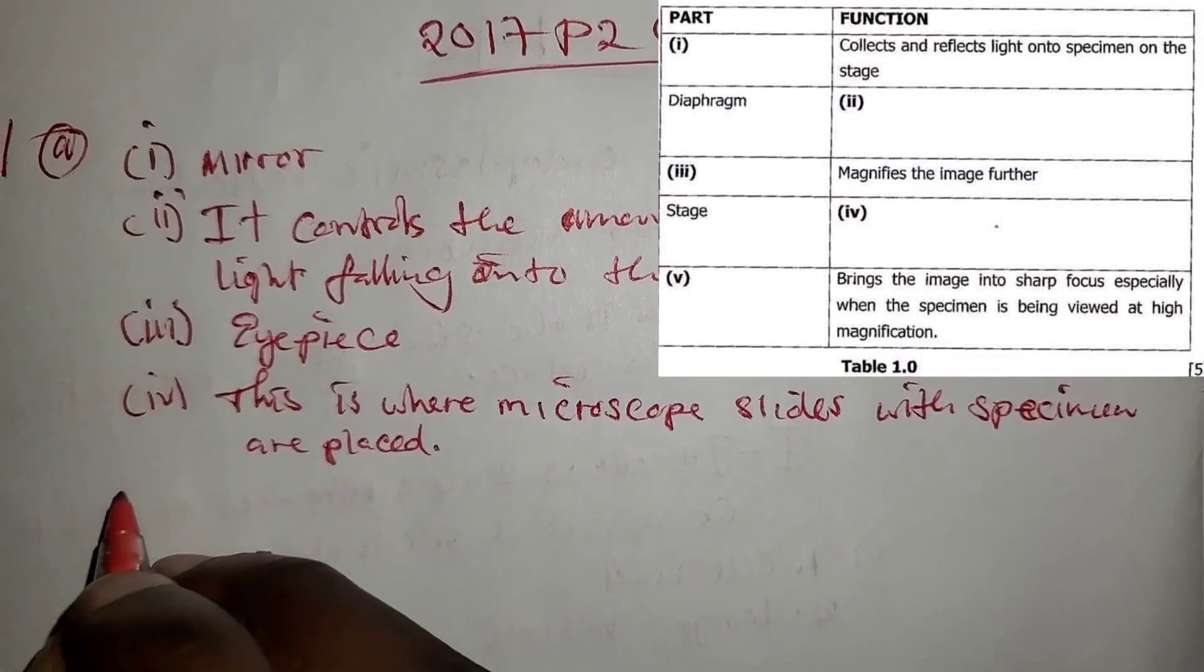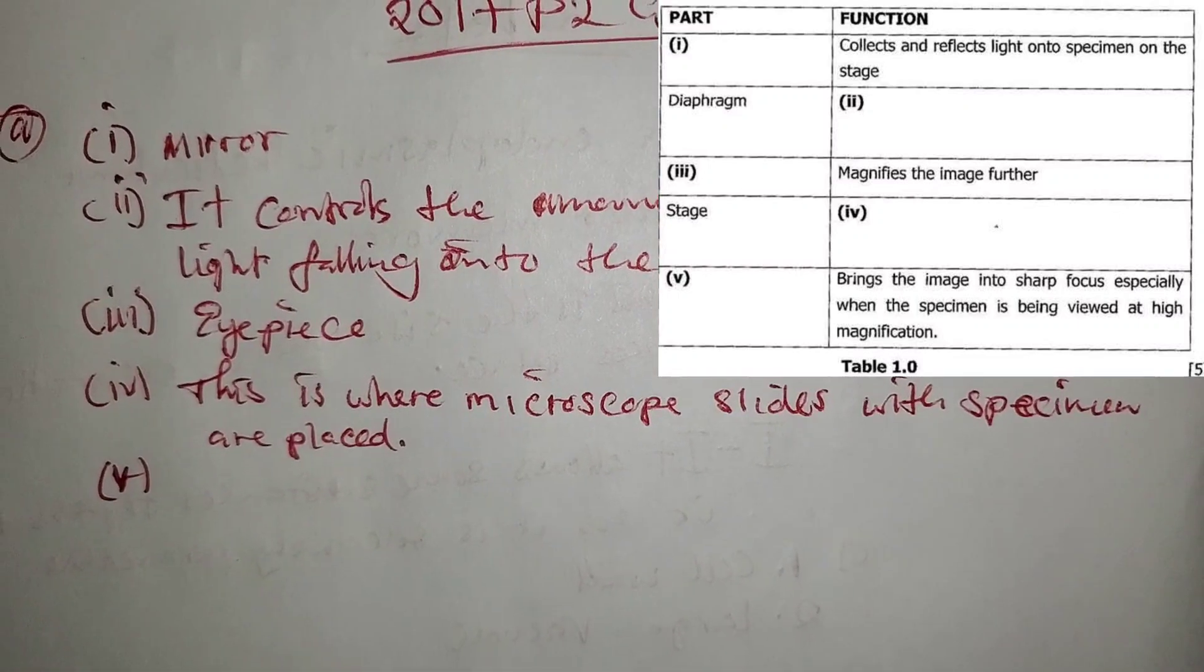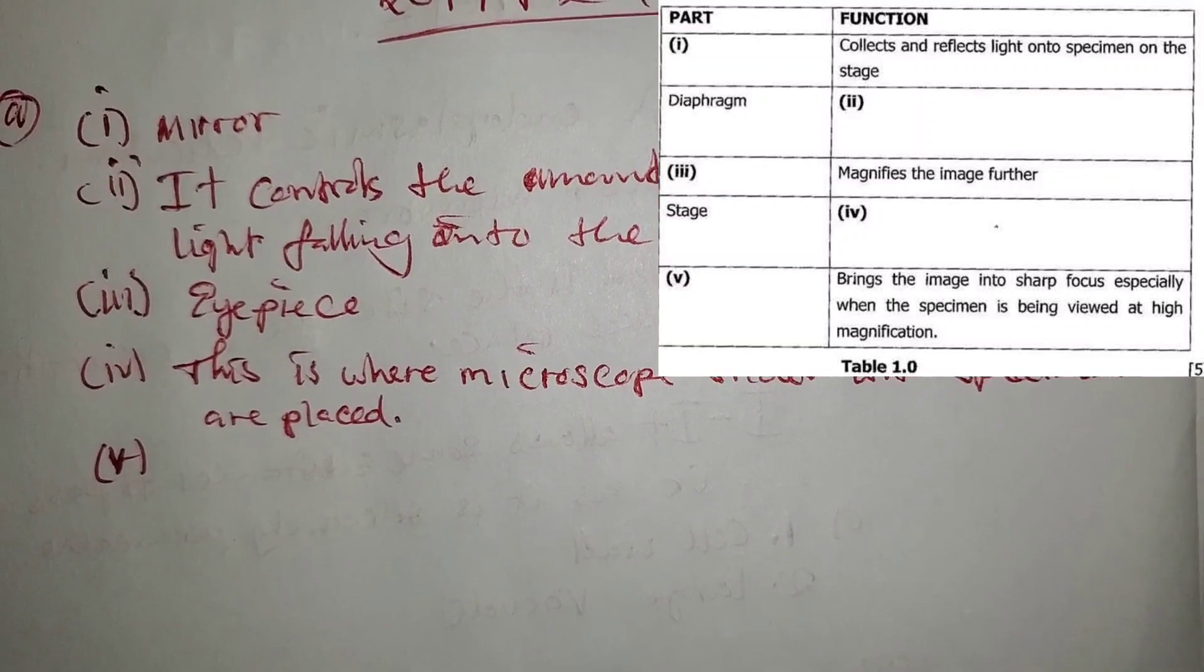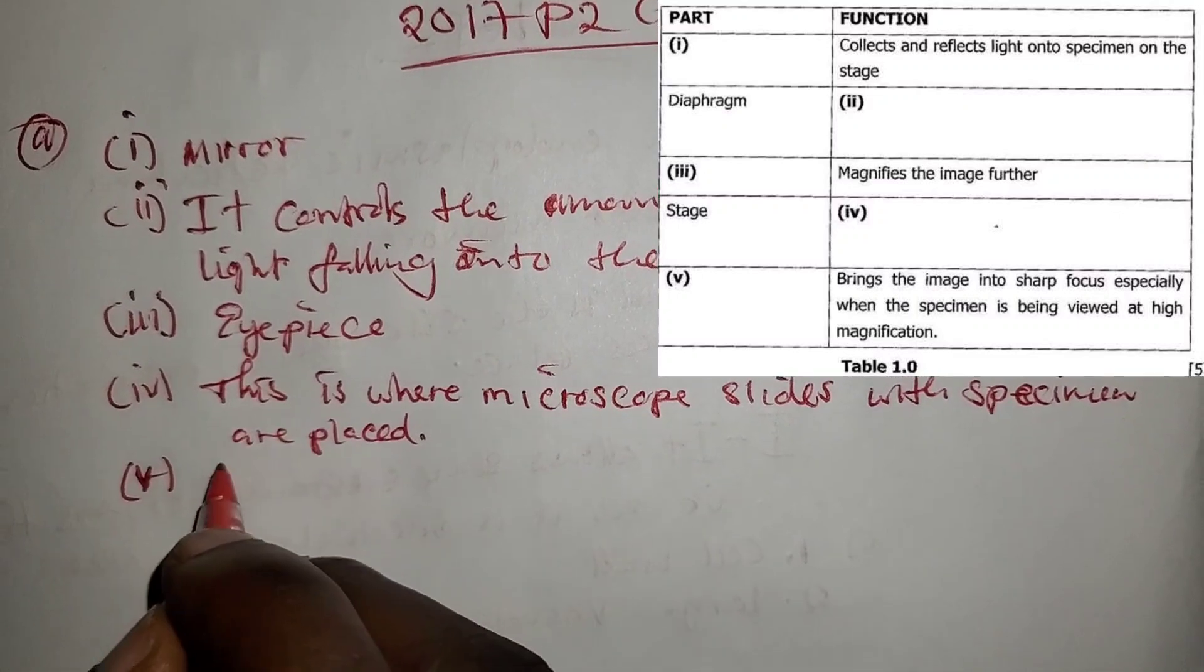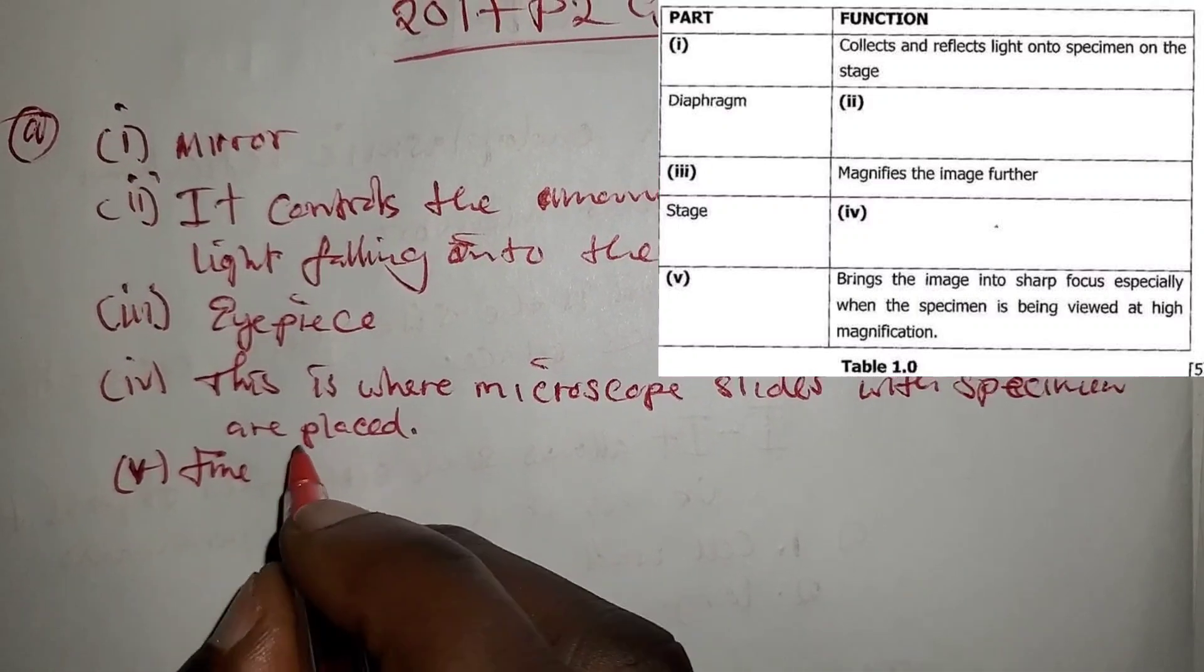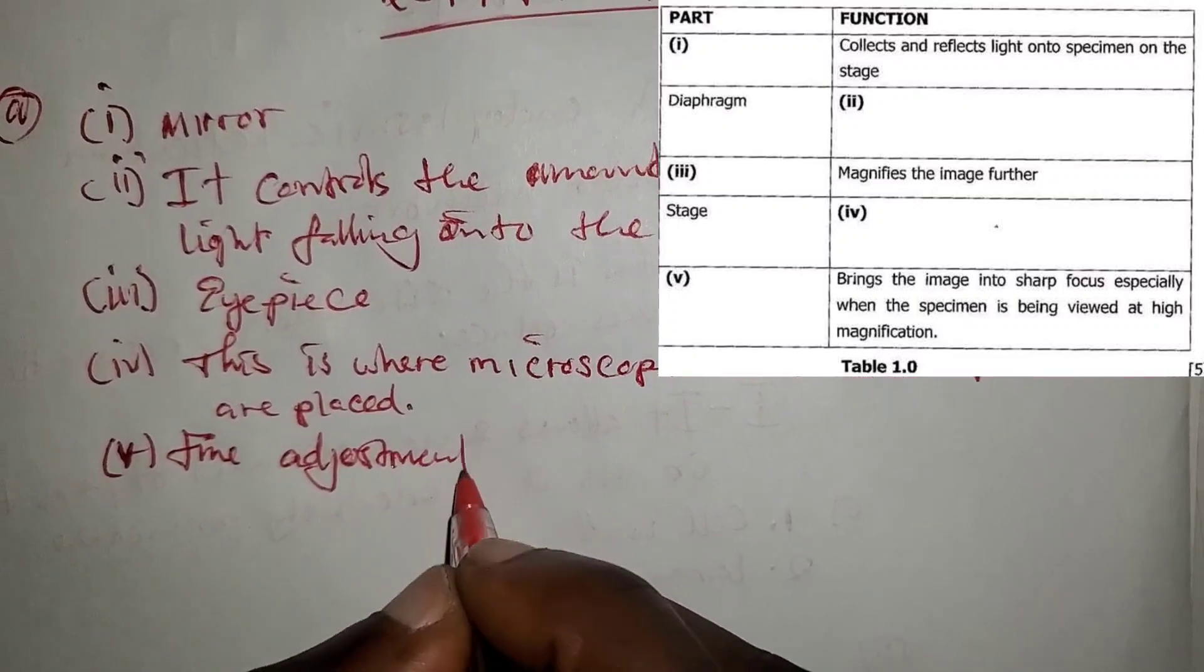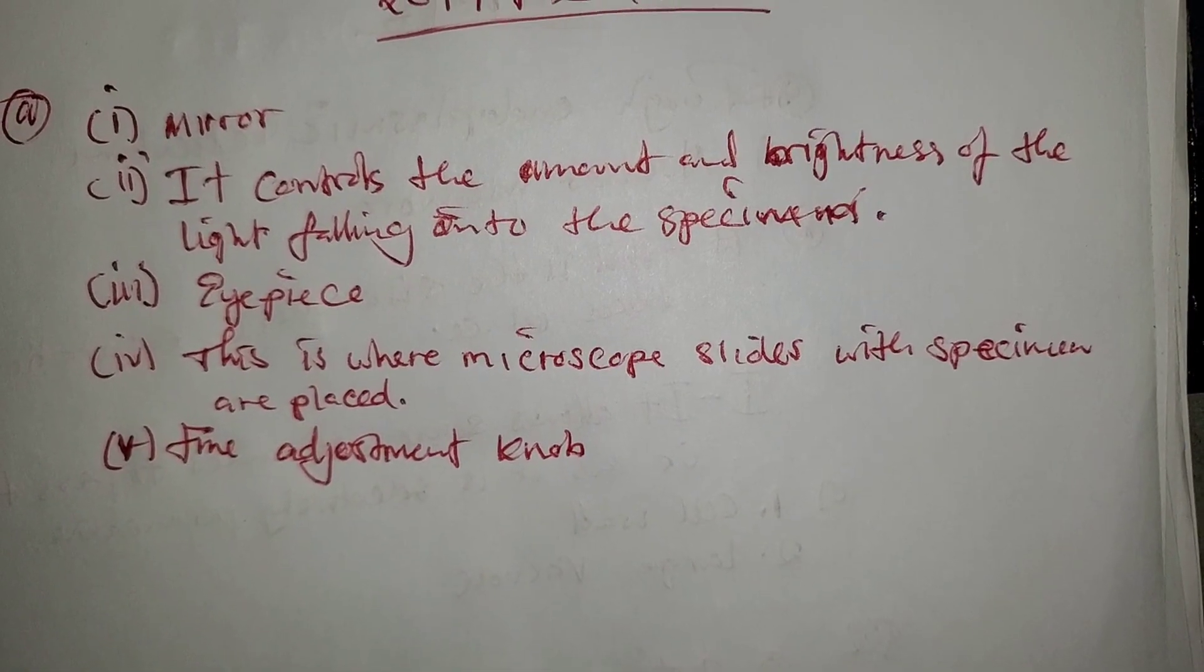The fifth one: which part of the microscope brings the image into sharp focus, especially when the specimen is being viewed at high magnification? This is the fine adjustment knob.